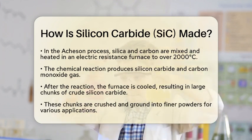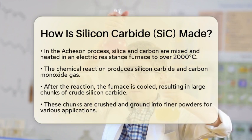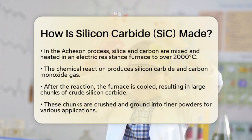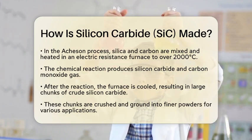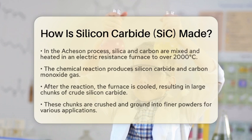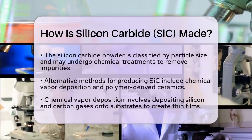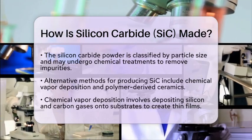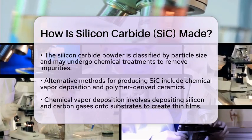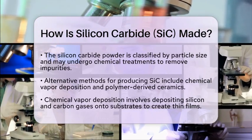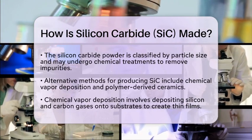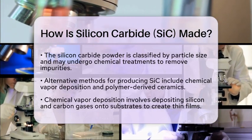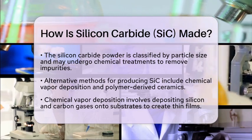This step is important because different applications require specific particle sizes. After crushing, the silicon carbide powder is classified by particle size. It may also undergo chemical treatments to remove impurities or adjust its surface properties, ensuring that the final product meets the desired specifications for its intended use.